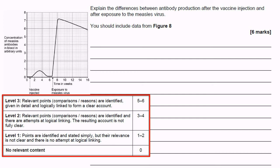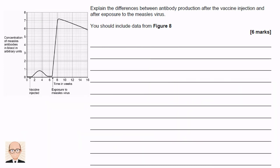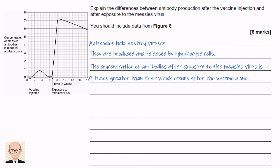Think about it as if you were teaching it to somebody else — consider the words, sentence structure, and logical step-by-step processes. The mark scheme gives the examiner a list of relevant points; you don't need to use all of them, just four or five, written in a way that makes sense to someone who knows biology. So to start: antibodies help destroy viruses. They are produced and released by lymphocyte cells. The concentration of antibodies after exposure to the measles virus is nine times greater than that which occurs after the vaccine alone.